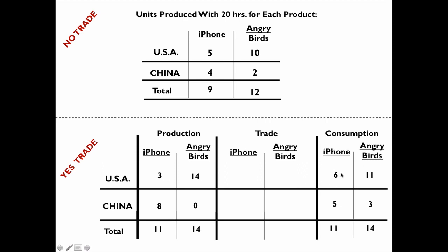Now I can calculate what was traded. I know how much they produce and how much they consume, so I can calculate how much they trade. The US produced 3 iPhones but ends up consuming 6, so they must have gotten 3 from China. China produced 8 iPhones but consumes 5 because they give 3 to the US. The US produced 14 Angry Birds but ends up consuming 11 because they give 3 to China. China doesn't produce any Angry Birds but consumes 3 because they get 3 Angry Birds from the US. And that's how we got the answer in class.